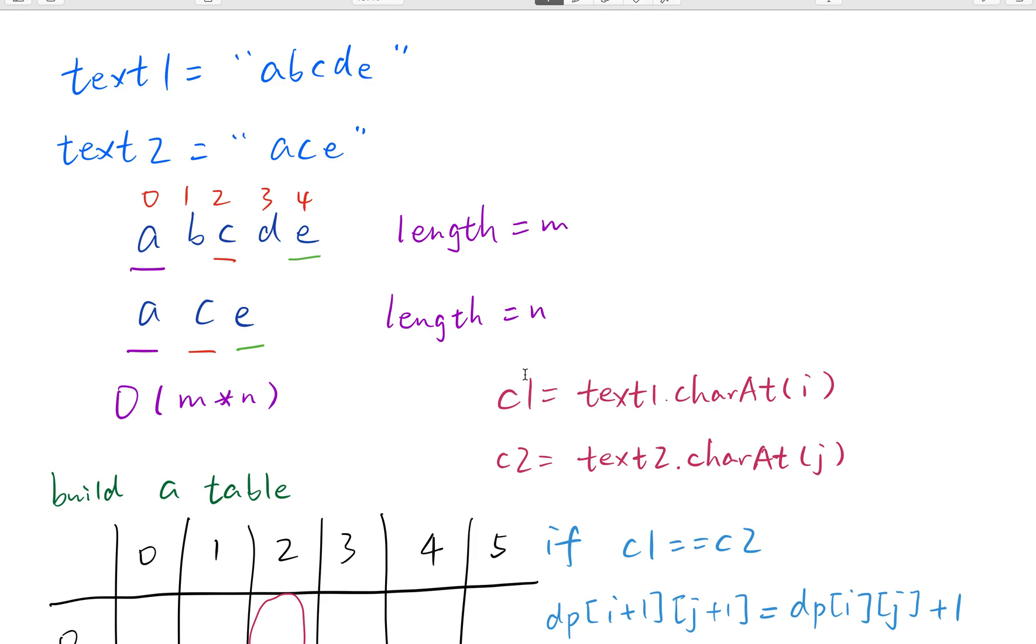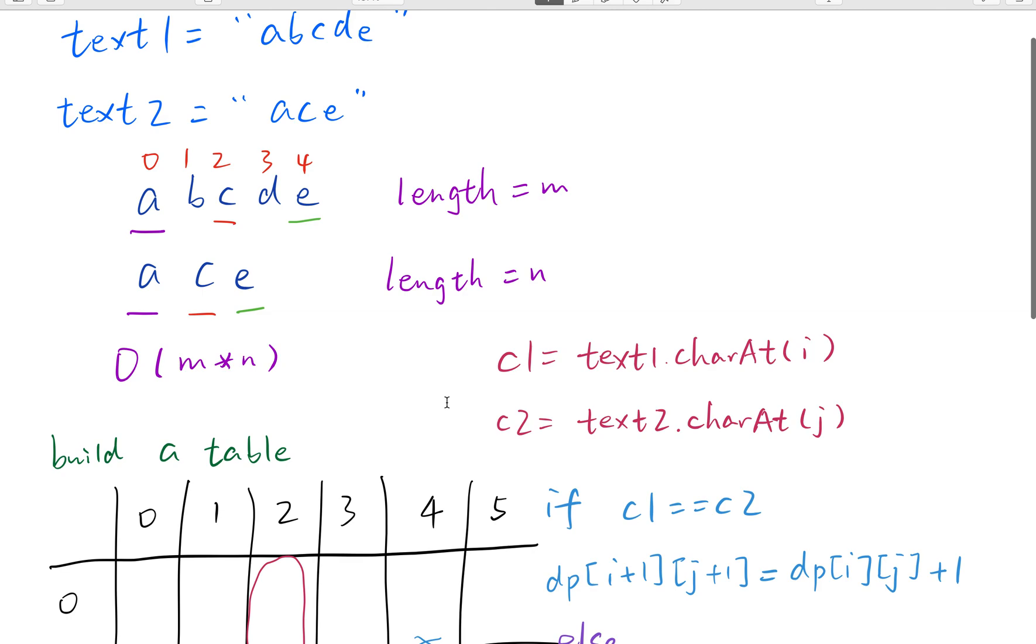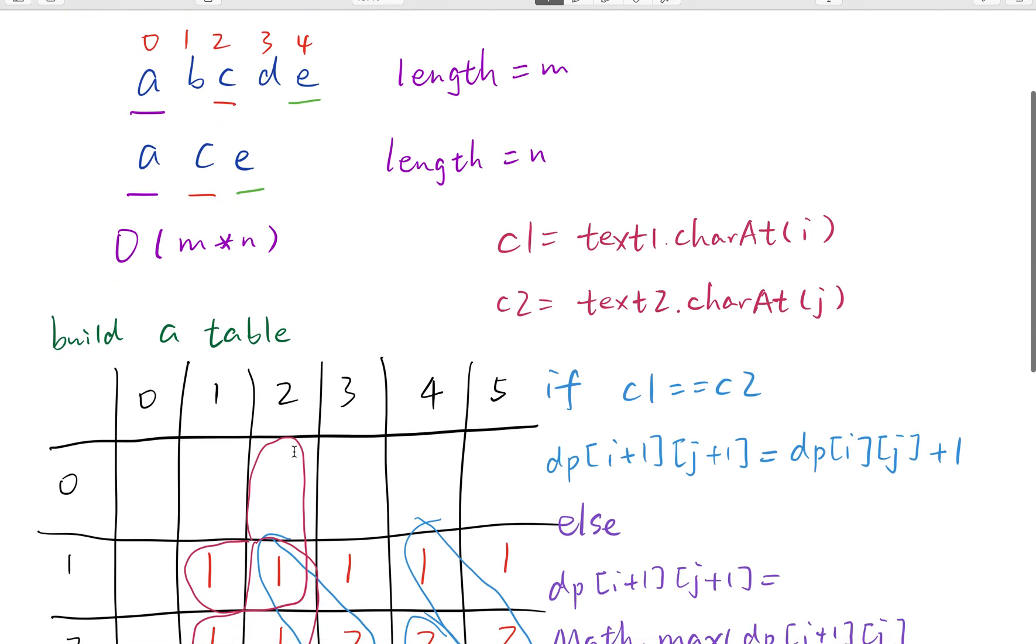Actually we can use a general method to fill this table. This is the DP array.